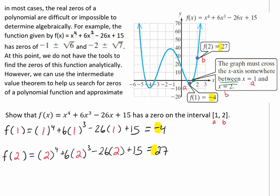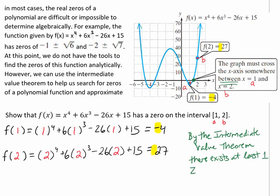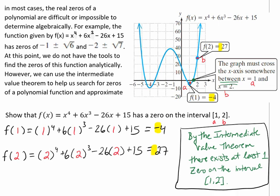At this point, we would be done. We would be able to say that by the intermediate value theorem, there exists at least one zero on the interval [1, 2]. And that would be our answer right here because all it asks us to do was to show that it has a zero on that interval, and we've done that.